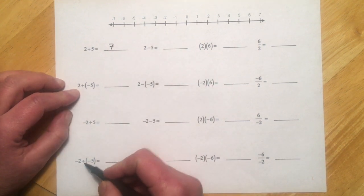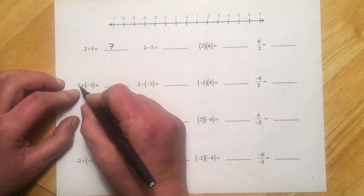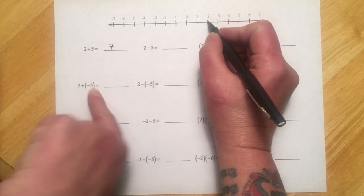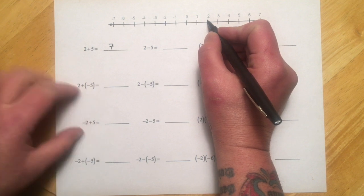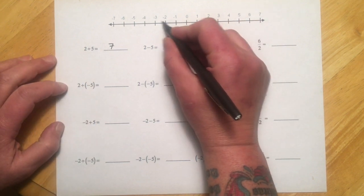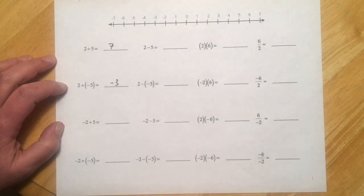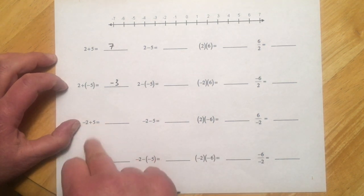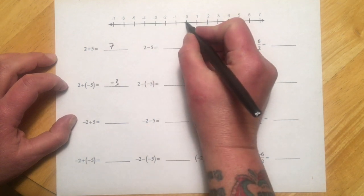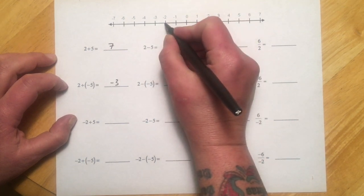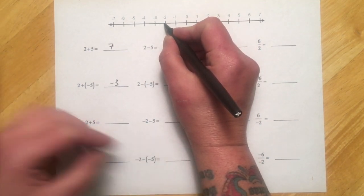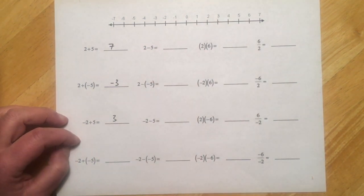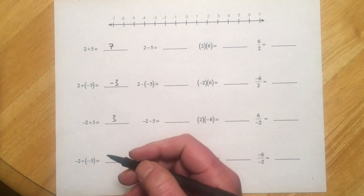Sometimes we have a little trouble with the negative signs, though, so let me just remind you how that works. 2 plus negative 5. So I'm going to start at 0, go up to 2, and then go back, go to the left, negative 5. So 1, 2, 3, 4, 5, and we're at negative 3. We do negative 2 plus 5, so we're running through all the sign combinations. So negative 2, we start at 0, go to negative 2, and then we come back positive 5. So 1, 2, 3, 4, 5, we're positive 3.